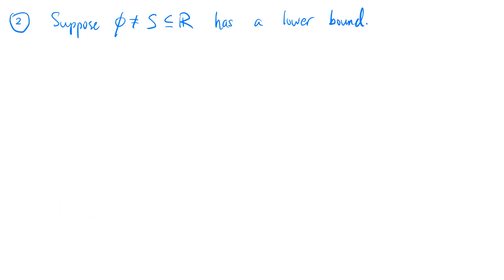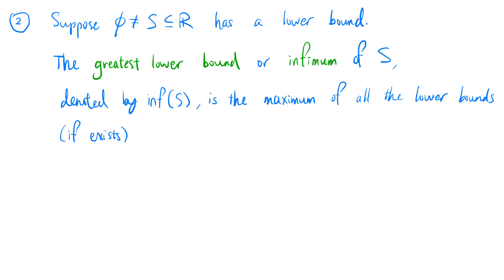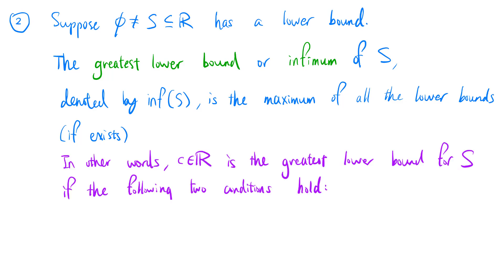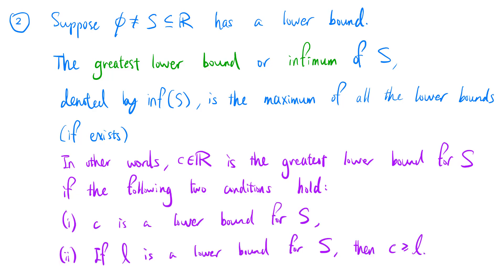Similarly, if s is a non-empty subset of the real numbers and it has a lower bound, the greatest lower bound, or infimum of s, denoted by inf(s), is the maximum of all the lower bounds if it exists. In other words, real number c is the greatest lower bound for s if: (1) c is a lower bound for s, and (2) if l is a lower bound for s, then c is greater than or equal to l.